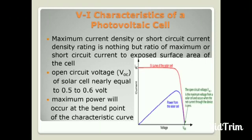VA characteristics of a photovoltaic cell: Maximum current density or short circuit current density is the ratio of maximum or short circuit current to exposed surface area of the cell. Open circuit voltage (VOC) of solar cell is nearly 0.5 to 0.6 volts. Maximum power will occur at the bend point of the characteristics curve.